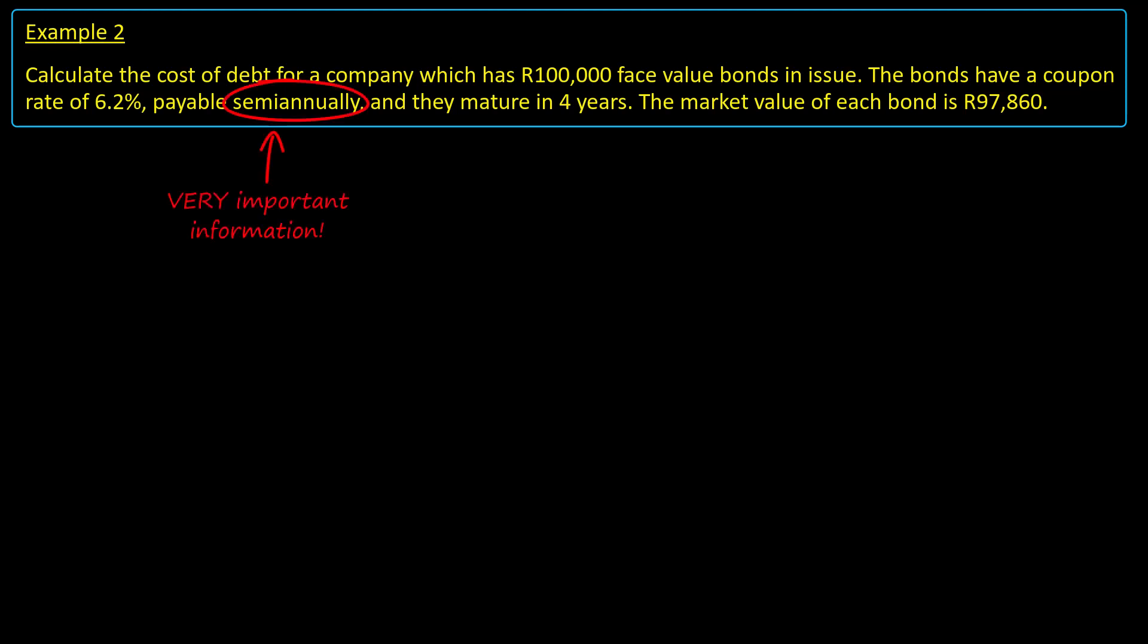In setting up the timeline, we pay careful attention to the fact that this bond's coupons are paid out every 6 months. Therefore, we must count 6 month periods and with 4 years until maturity, we have 4 times 2 equals 8 notches for our timeline. We enter the market value at T0 as negative 97,860.